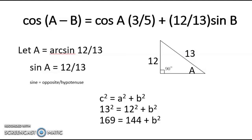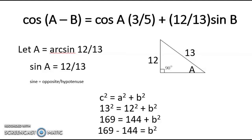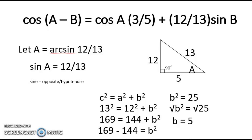169 is equal to 144 plus B squared. And B squared is equal to 169 minus 144, which is 25. Extracting the square root of both sides, we have square root of B squared equals square root of 25, which is positive and negative 5. But because there is no negative length, we disregard negative 5. So B is equal to 5, and our adjacent side is 5. We know that cosine is equal to adjacent over hypotenuse. So cosine A is equal to 5 over 13. Then let's substitute this into the formula.